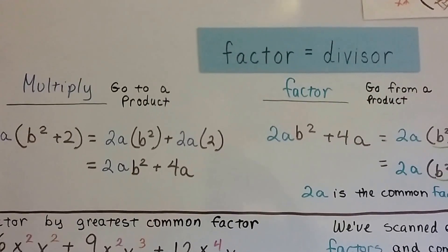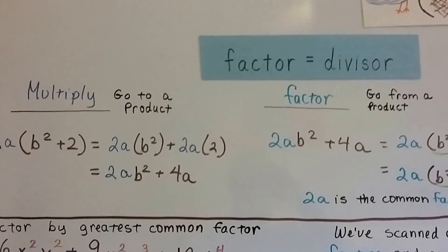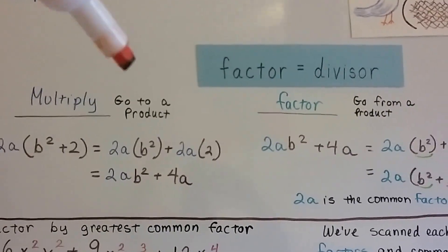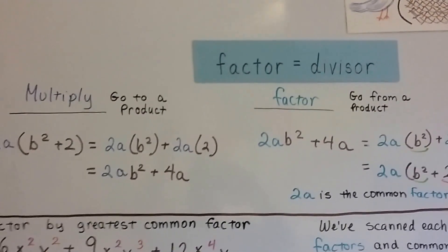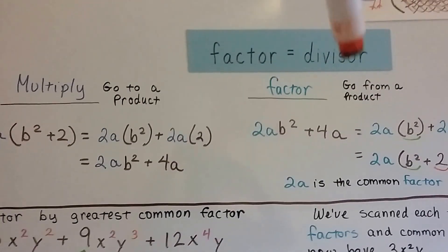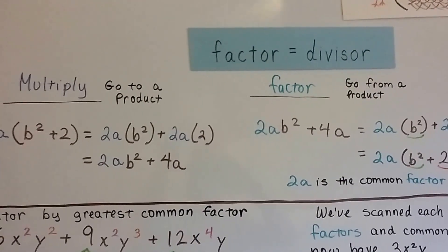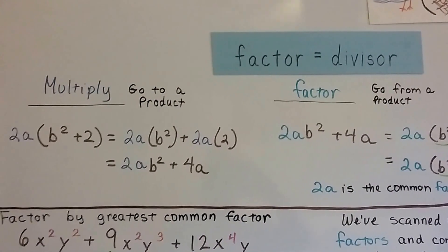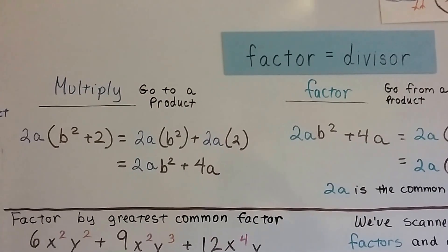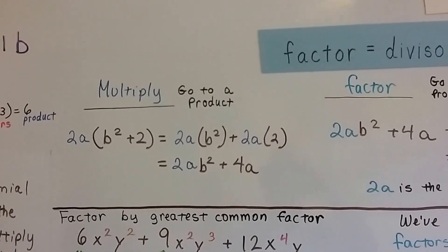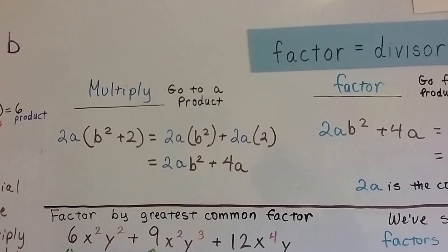If we multiply or factor, we can compare them. When we multiply, we go to a product, and when we factor, we go from a product. Remember, factor means divisor. We could use any of these as a divisor for 6.